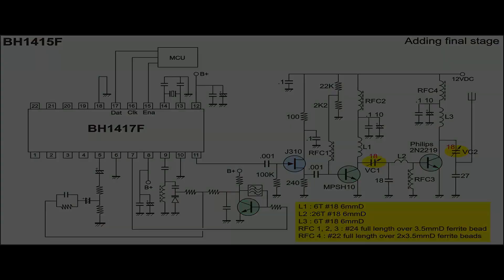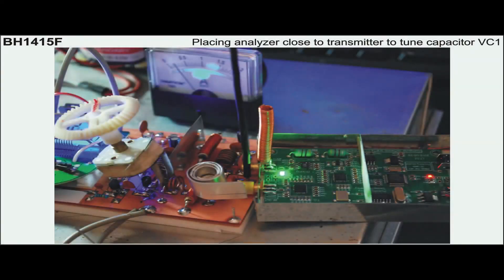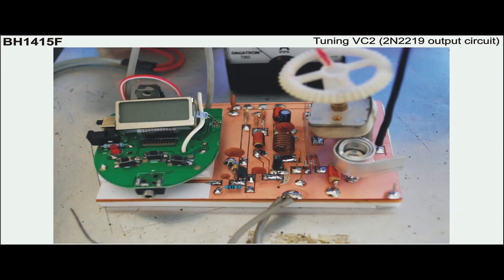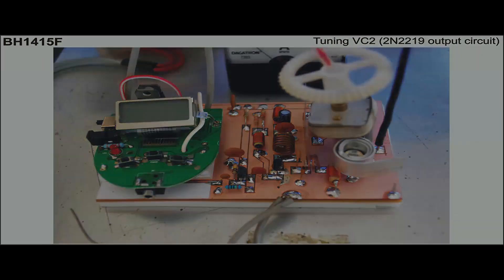This photo shows how to tune VC1 while the RF output is monitored on the spectrum analyzer display. Same with tuning the variable capacitor for VC2 at the connector of Q3.